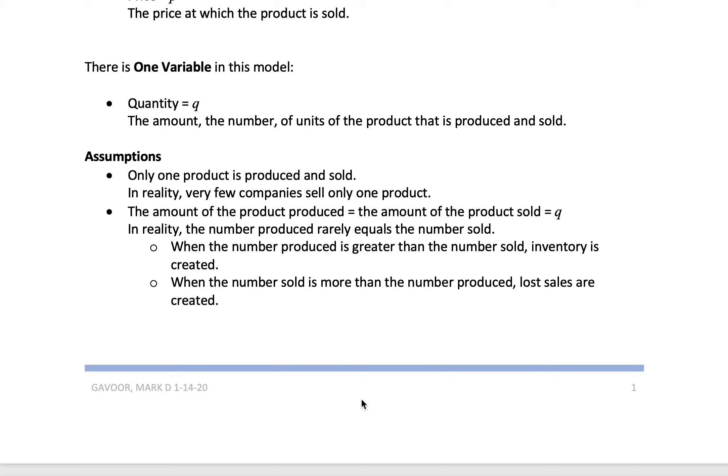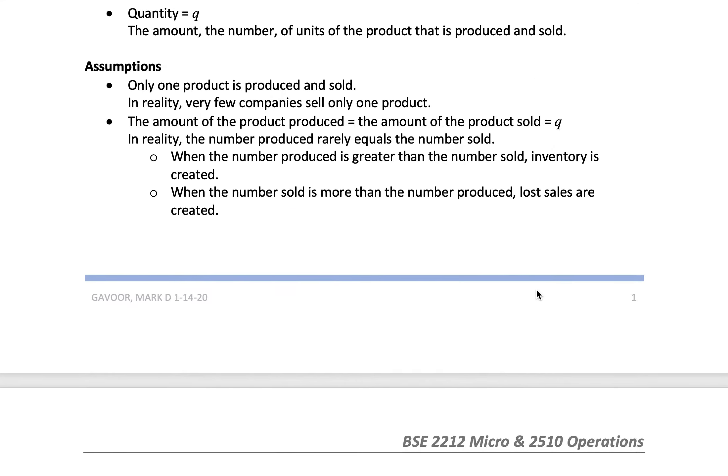The amount of product produced equals the amount of product sold, Q. Companies rarely sell what they think they're going to sell. In reality, the number produced rarely equals the number sold. If the number produced is greater than the number sold, inventory is created. When the number sold is more than the number produced, lost sales are created. If one thing upsets salespeople and C-level executives, it's lost sales. But in this model, we don't worry about that.